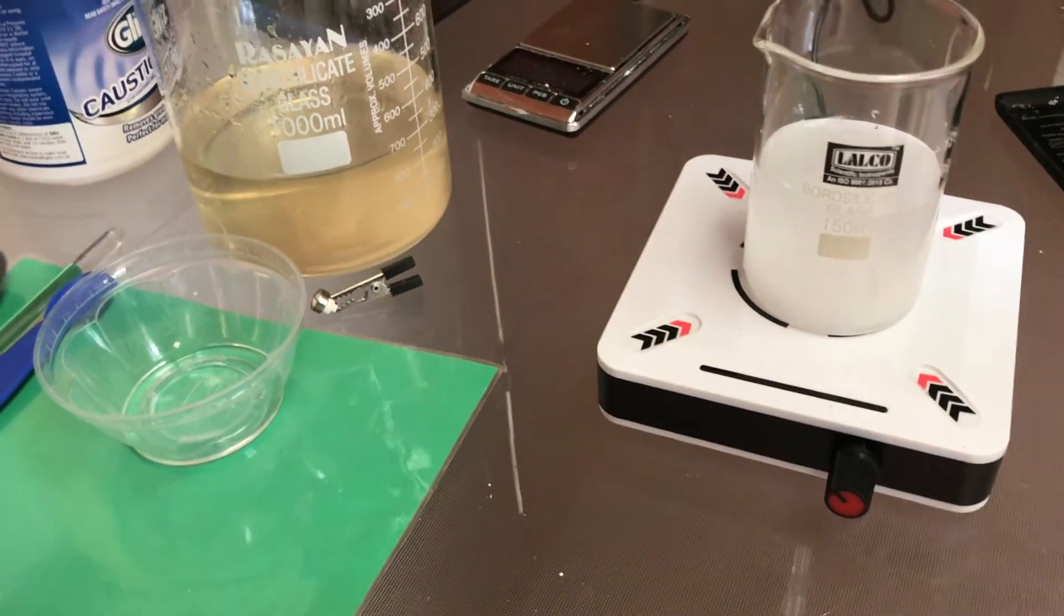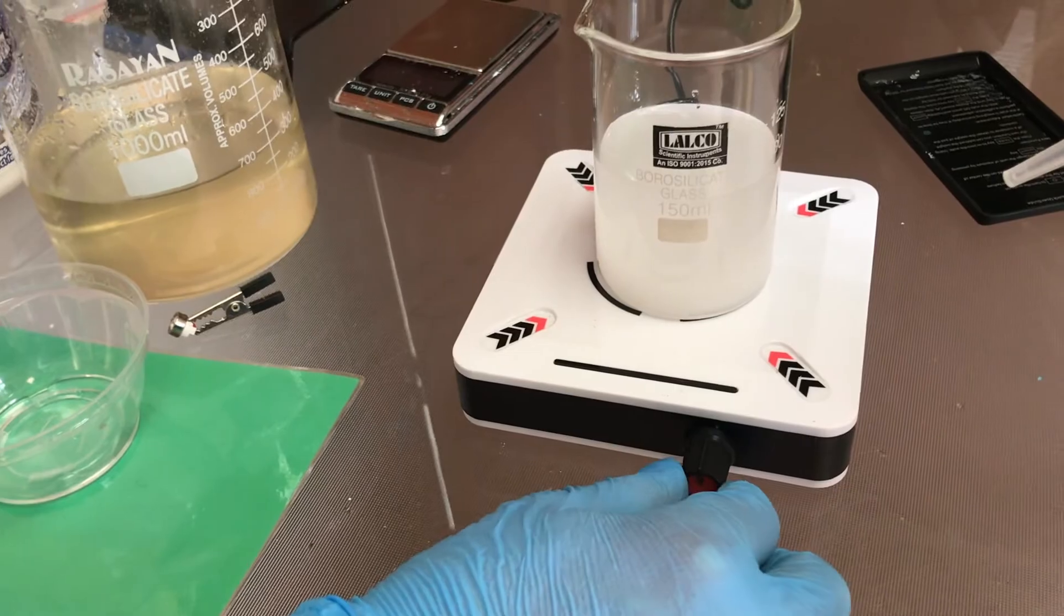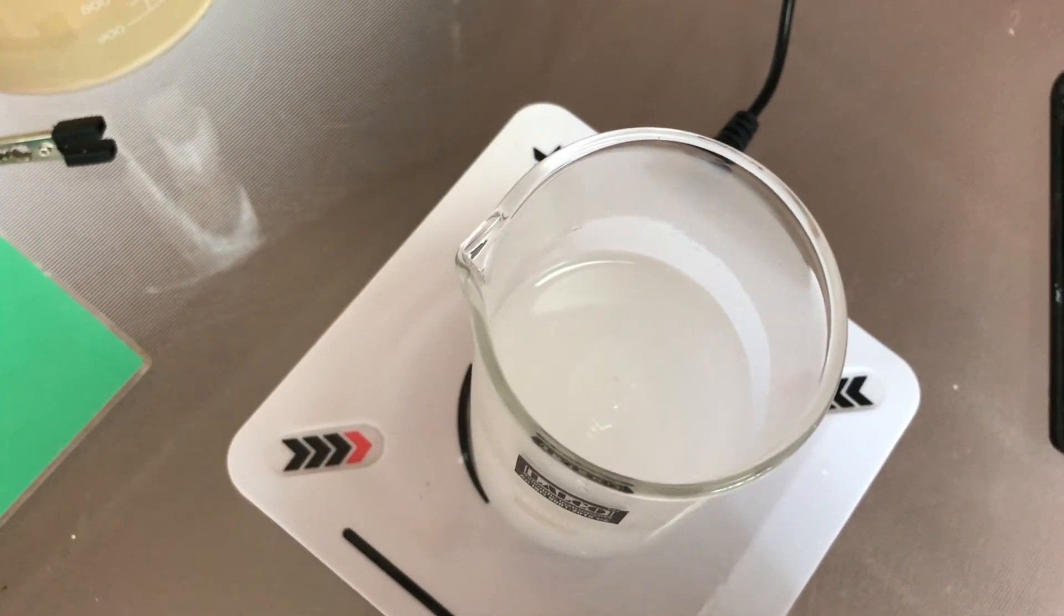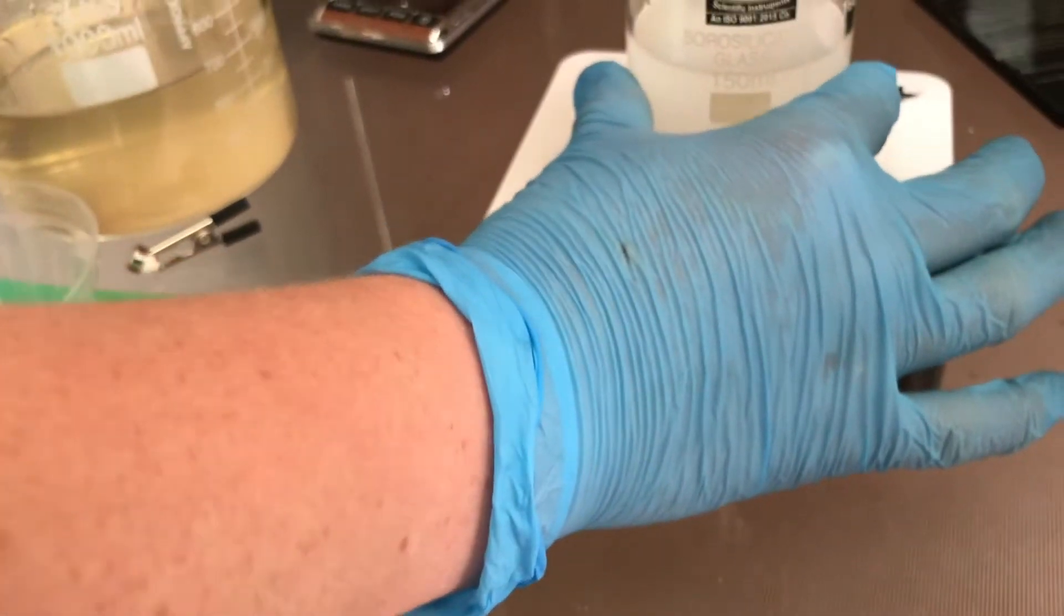Stir until the sodium hydroxide is completely dissolved. You may observe that this is an exothermic reaction as steam has been given off and because it is quite hot to touch.